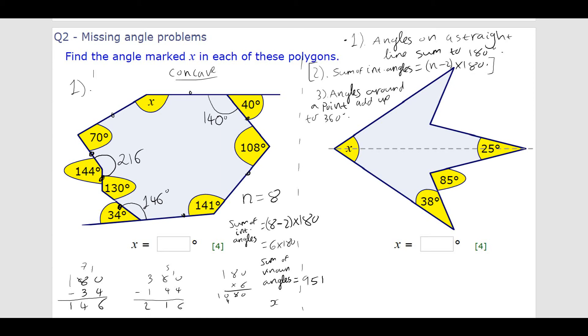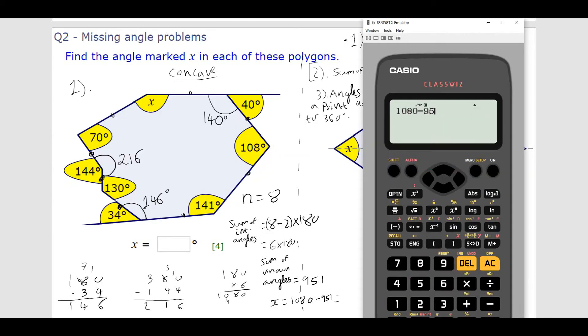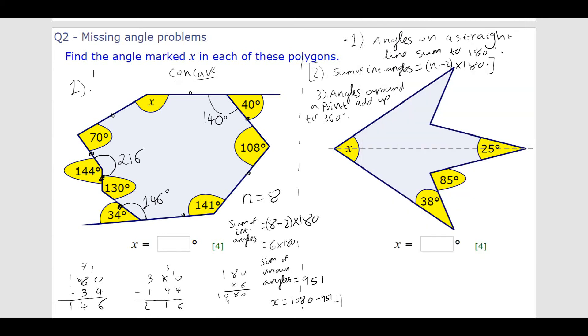So, to get x, I simply need to do 1080 minus 951. Which is going to be 129. And it's quite sensible. We can see x looks something around that. Of course, it's not drawn to scale, but it's quite a sensible answer. If we'd had an acute angle as an answer, that would not have been sensible. So, I would say x is 129 there.